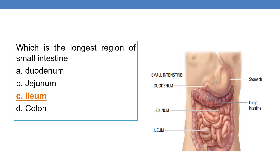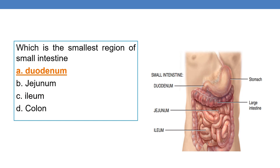Which is the longest region of the small intestine? Ileum is the longest region of the small intestine, so option C is correct. Next question: which is the smallest region of the small intestine? Duodenum is the first and the smallest region of the small intestine.